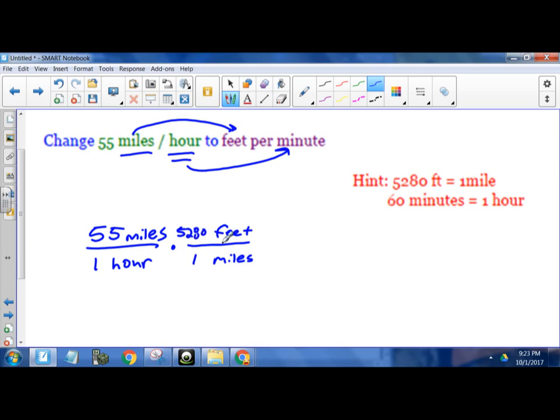So 5280 feet, 1 mile, they're equal. So this statement right here, this ratio is actually just equal to 1. So we're multiplying by 1, which is not changing the value, but it is going to change the units.